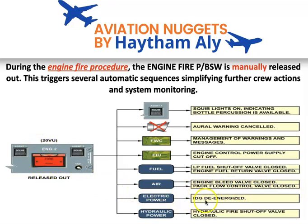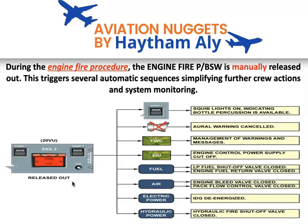What about electrical power? When you release the engine fire push button, the IDG is de-energized — not disconnected, but de-energized. Finally, when you release the engine fire push button, the hydraulic fire shutoff valve will close, preventing hydraulic fluid from going into an engine on fire, because hydraulic fluid is flammable and would propagate the fire.